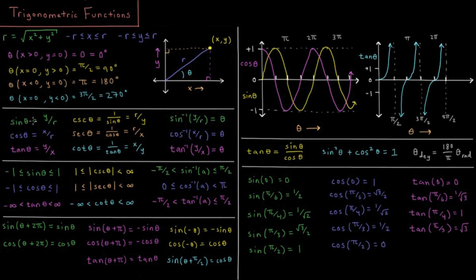The ranges of these functions: since y is bounded and its magnitude has to be smaller than or equal to r, this is always a smaller number divided by a bigger number. So negative 1 is less than or equal to sine of theta, which is less than or equal to 1 — sine goes from negative 1 to positive 1. Similarly, x can't be bigger than r, so cosine also goes from negative 1 to 1.